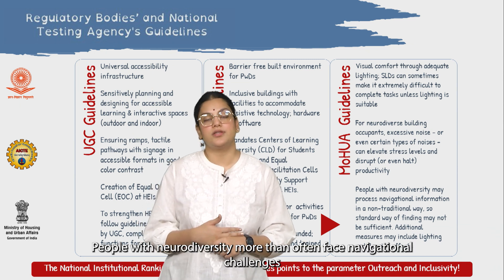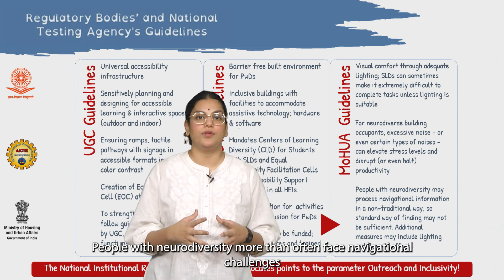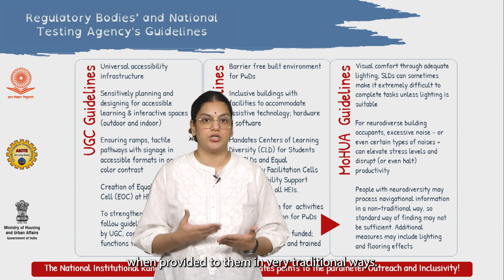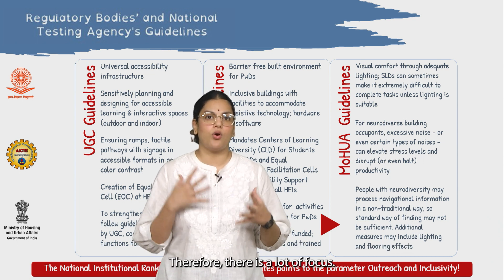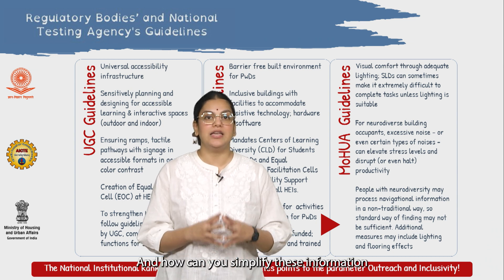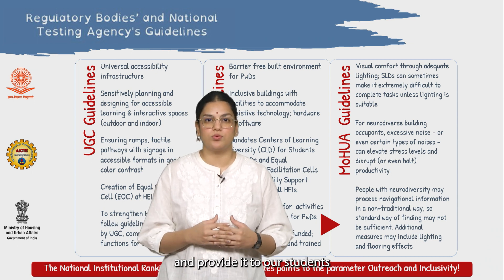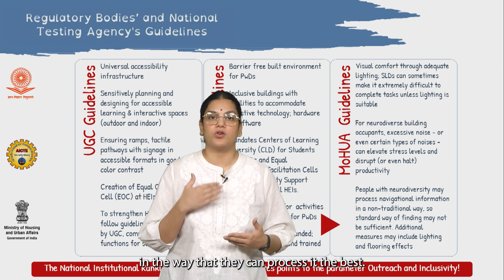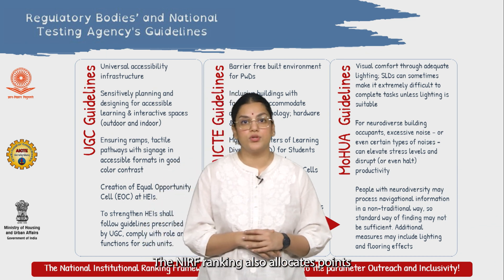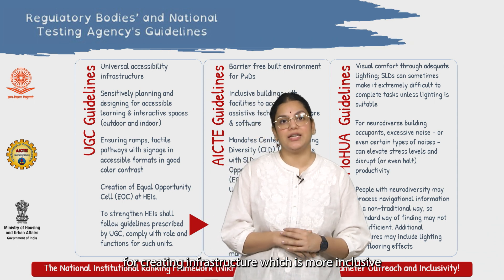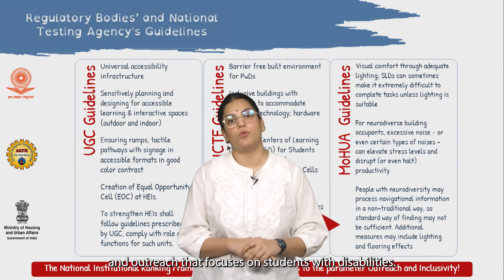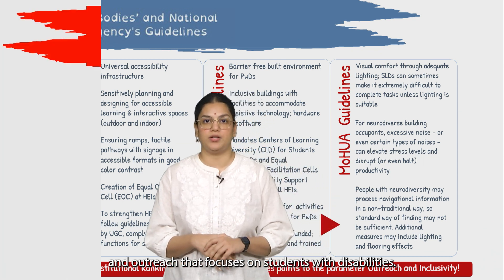People with neurodiversity more than often face navigational challenges when information is provided in very traditional ways. Therefore, there is a lot of focus on simplifying information and providing it to students in the way they can process it best. The NIRF ranking also allocates points for creating more inclusive infrastructure and outreach that focuses on students with disability.